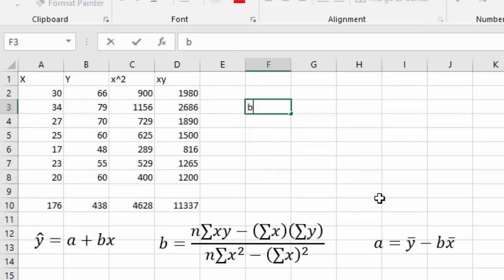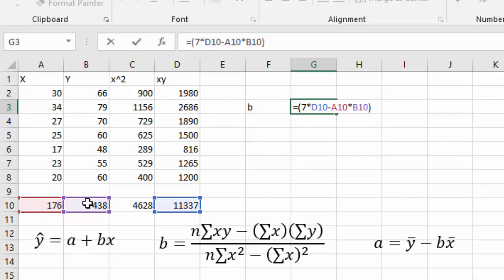To find our b the slope we'll say equals, open a parentheses for the numerator. The sample size we've got seven data values times the sum of the xys. We'll click that one. Minus the sum of the x's times the sum of the y's and close the parentheses on the numerator. Divided by open a parentheses.